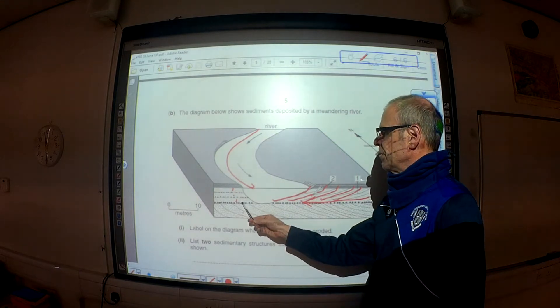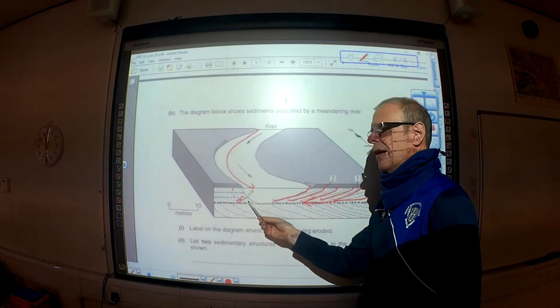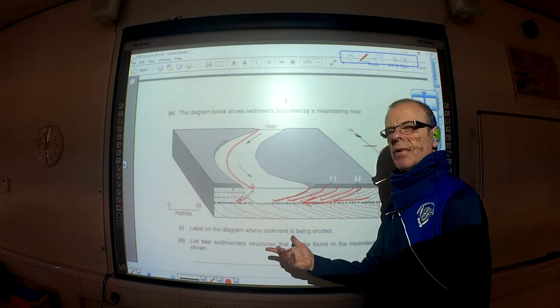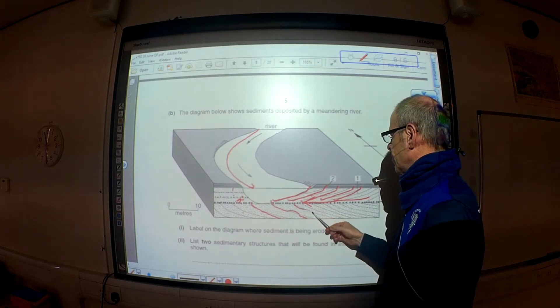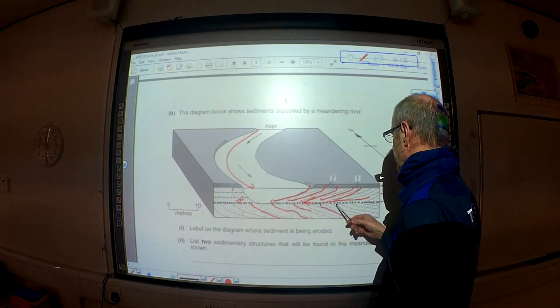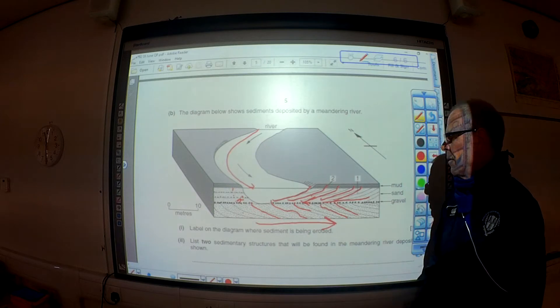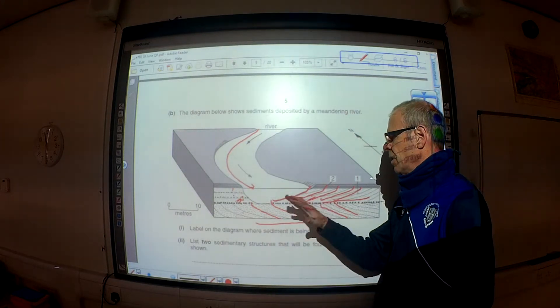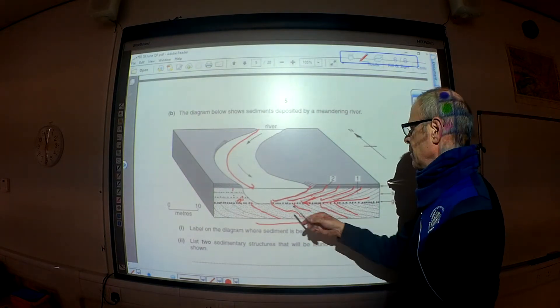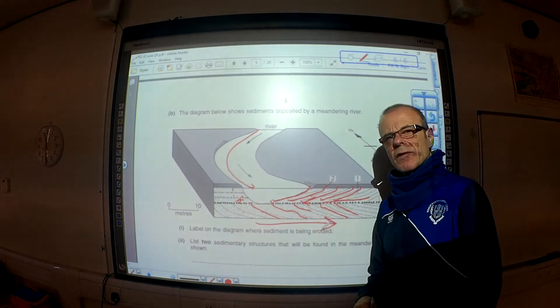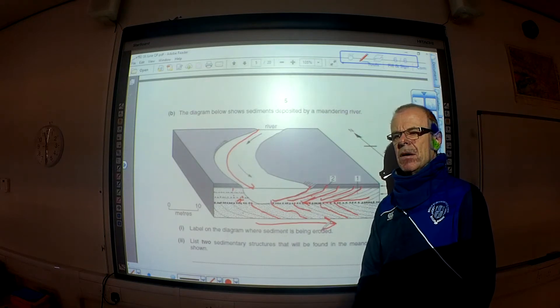Firstly within each unit you get a fining upward sequence with a channel lag conglomerate at the base and floodplain silts at the top. And also you get these series of what are called accretion surfaces which show the direction of migration of the meander through time. In that unit it was migrating from left to right across the floodplain, plastering sand and mud on those accretion surfaces as it went. So we've got one, two, three, four, five units, five depositional units, five bits of evidence for lateral erosion through time on that river, on that meandering river section.